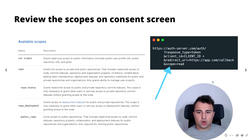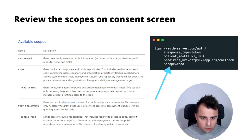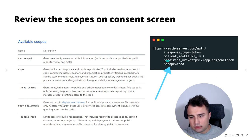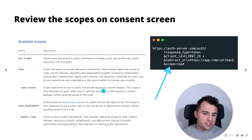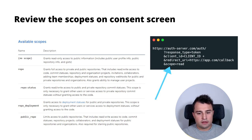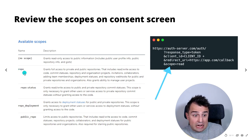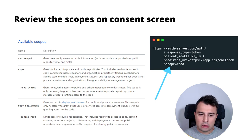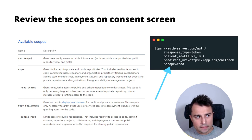Second, review the scopes on the consent screen. When we execute the flow and there's this consent screen — 'do you want to allow this application to access this and that?' — we define those scopes in our authorization request. For example, these are the scopes available in GitHub: you can ask for access to repo, repo status, public repo, repo deployment. The list of possible scopes is very long, but it's really important not to allow too much for applications to do.